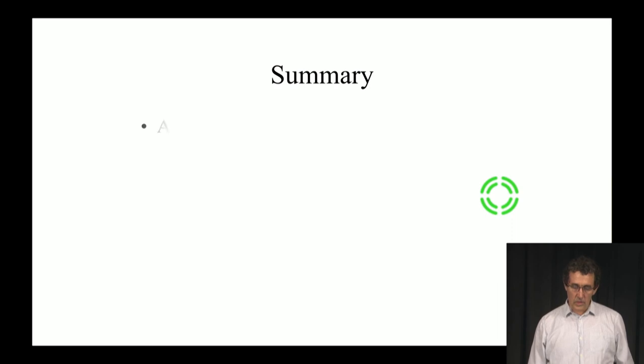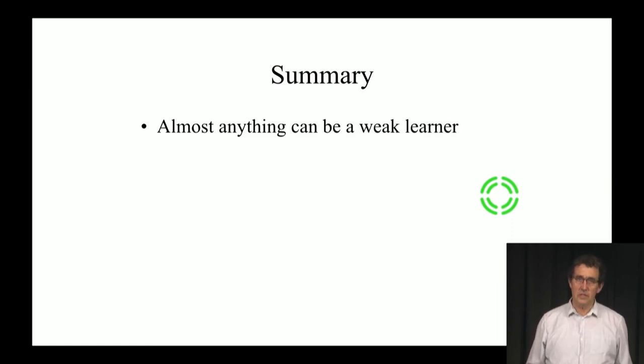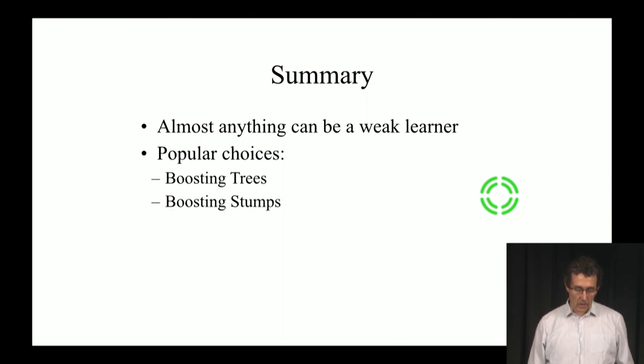To summarize, almost anything can be used as a weak learner. Some popular choices are boosting trees and boosting stumps, which is also boosting trees, just trees with one level. Those are the popular ones. Those are the ones for which you can find a lot of software. There's many other possibilities.